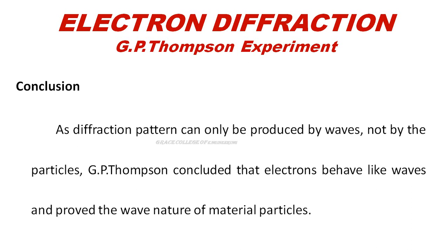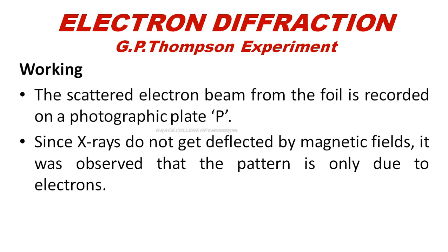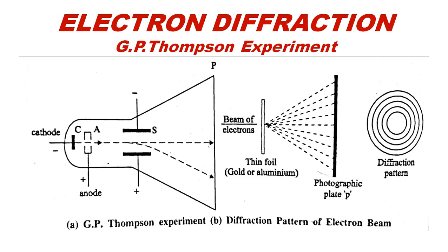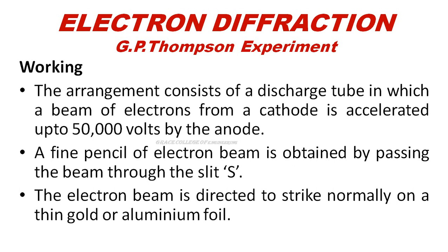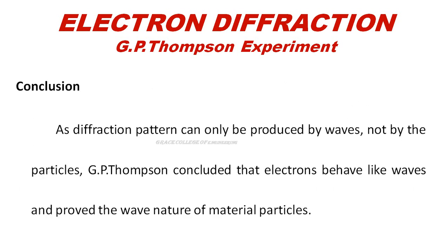The electron beam is identified as waves by the resulting diffraction pattern. This confirms that material particles such as electrons and protons have wave nature. G.P. Thomson used this experiment to explain the wave nature of electrons. Moving particles associated with a wave are called matter waves.